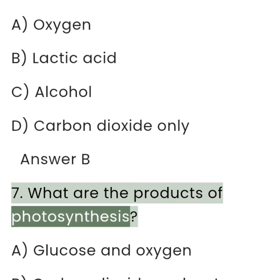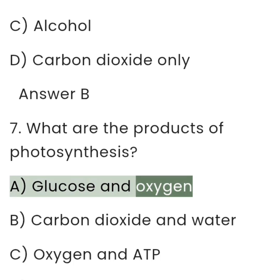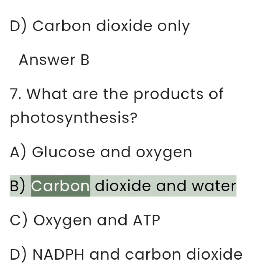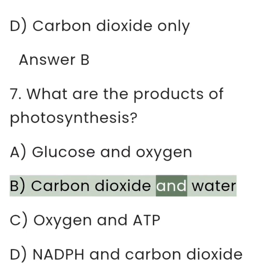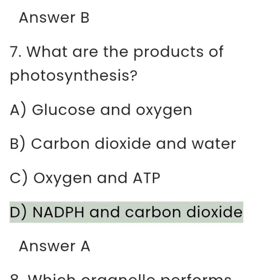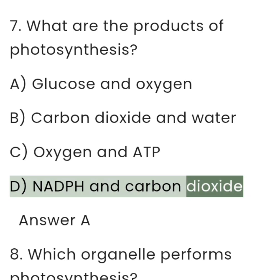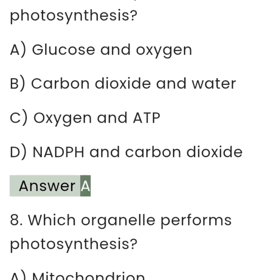7. What are the products of photosynthesis? A. Glucose and oxygen. B. Carbon dioxide and water. C. Oxygen and ADP. D. NADPH and carbon dioxide. Answer: A.